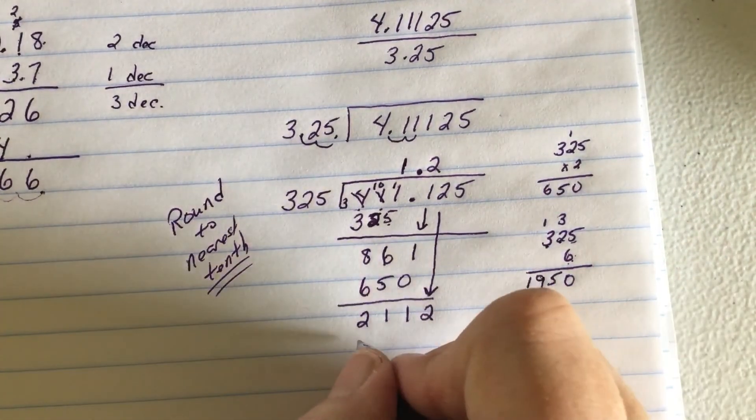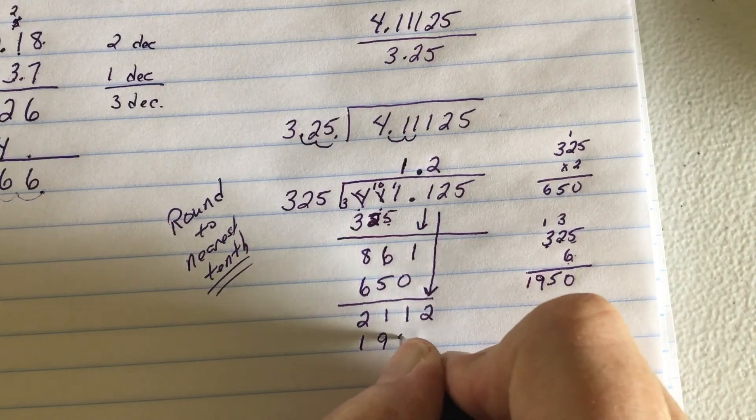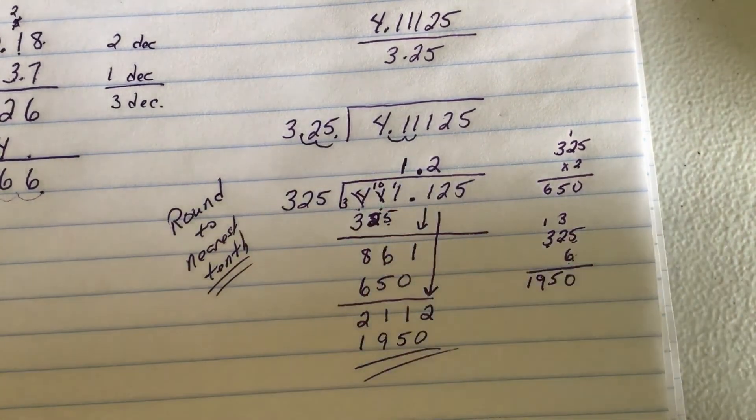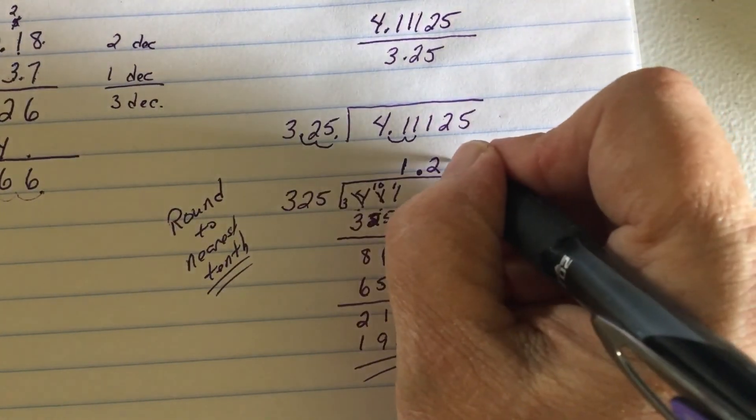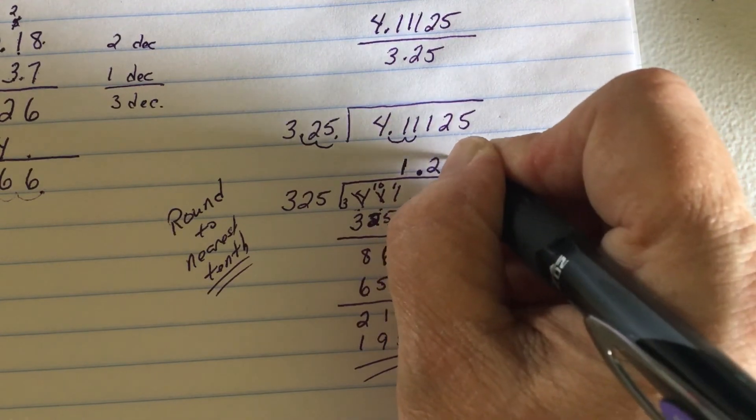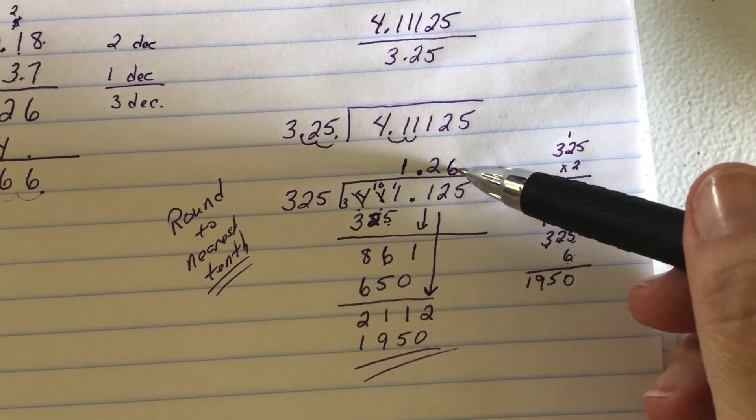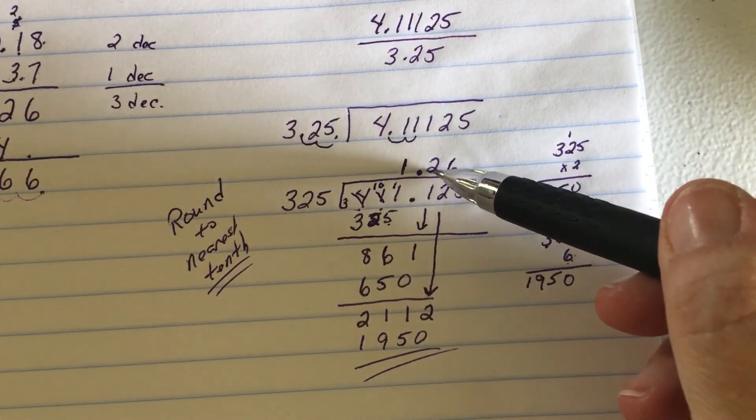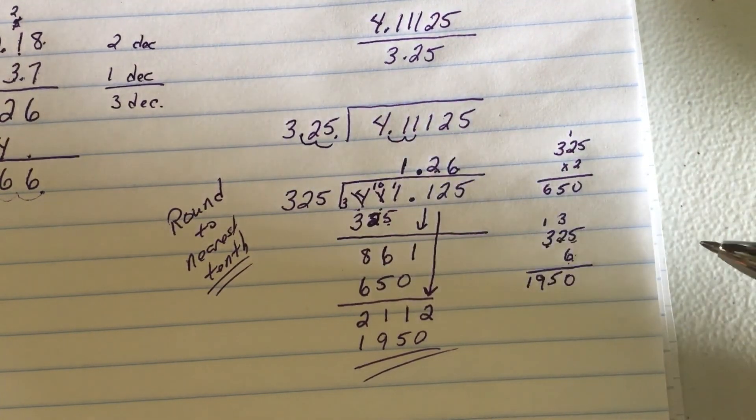So, 1950. Now, I could subtract, but I don't care. Because it says round to the nearest tenth. I need that digit to tell me how to round that digit. That's all I need it for. Any other digit after that, if I continue on, is considered unnecessary.